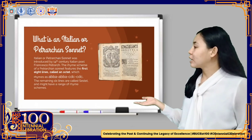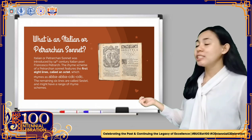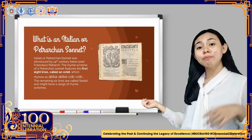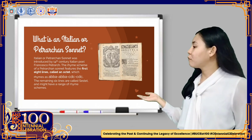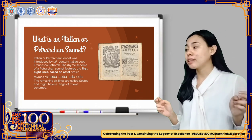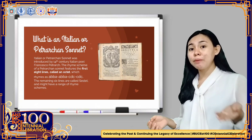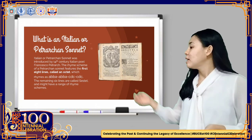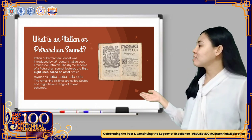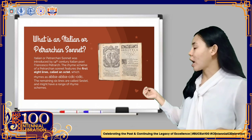What is an Italian or Petrarchan sonnet? The Italian or Petrarchan sonnet was introduced by 14th-century Italian poet Petrarch. It features the first 8 lines called an octet, which rhymes as ABBA, ABBA. The remaining 6 lines are called the sestet and might have a range of rhyme schemes.